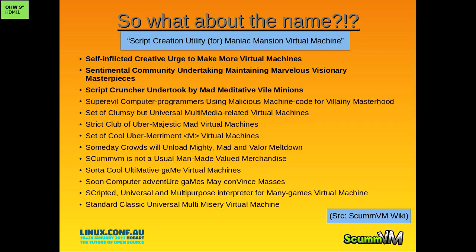What about the name? We copped a lot of flack as the project scope increased. Script Creation Utility for Maniac Mansion Virtual Machine - SCUMVM - technically stands for something that supports a lot more than that now. The acronym was wrong from the beginning. I personally like these alternate meanings suggested by the community: 'Self-inflicted Creative Urge to Make More Virtual Machines' - that certainly sums up the project. 'Sentimental Community Undertaking, Maintaining Marvellous Visionary Masterpieces.' And 'Script Country Undertaken by a Mad and Meditative Vile Millions.'